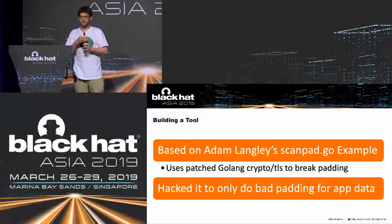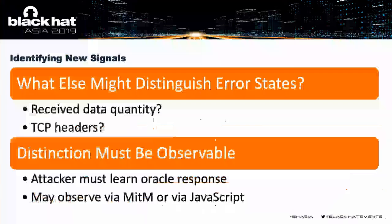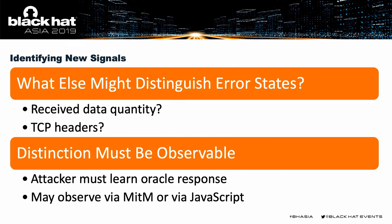The next thing I thought about was how to distinguish different error states. One of the things we looked at in ROBOT was the amount of data coming back — some servers would send two TLS alerts rather than one for certain errors. It's also possible, like with Poodle, that you get data back even though there were padding errors. Another big one is TCP headers: how is the connection being established? Is it being torn down with a reset or a FIN? Is the socket left open? Maybe you have a push flag that comes up in random places. Whatever errors we find, they need to be observable for this to actually be exploitable.